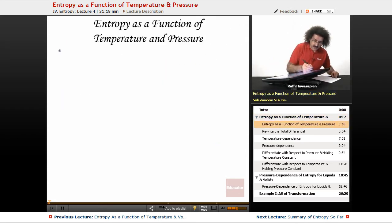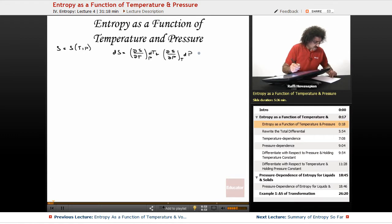So now let's take entropy as a function of temperature and pressure, and write our total differential expression, which is going to be ds equals (∂s/∂T) at constant pressure times dT plus (∂s/∂P) at constant temperature times dP.